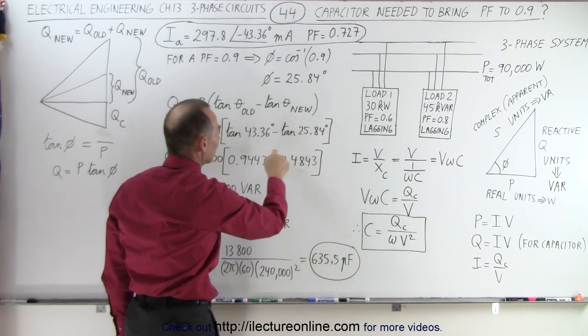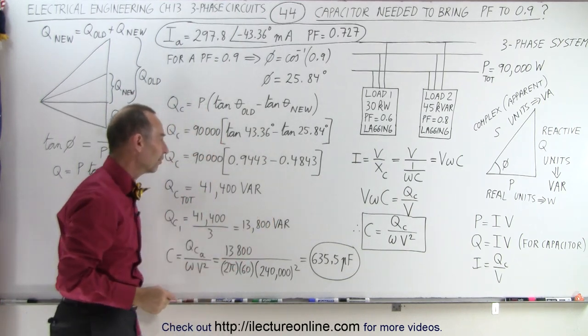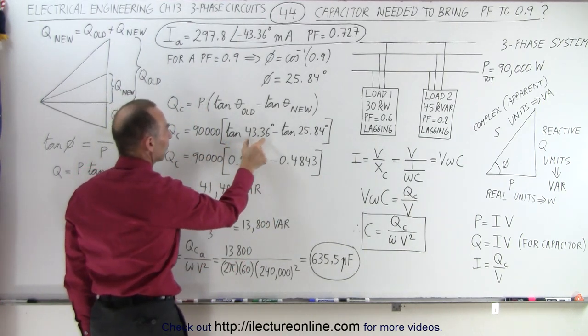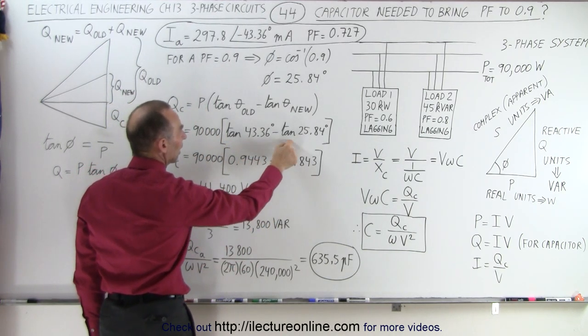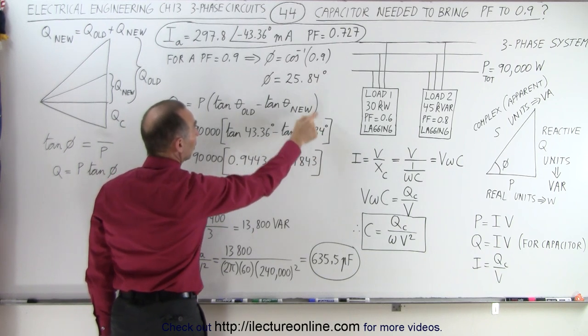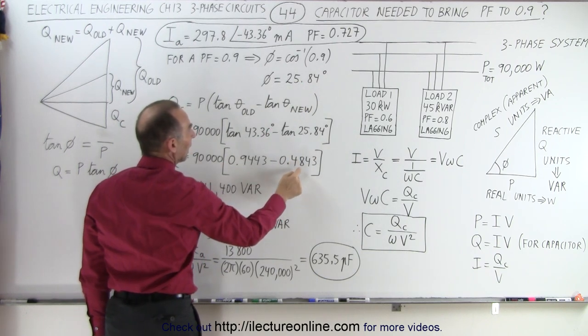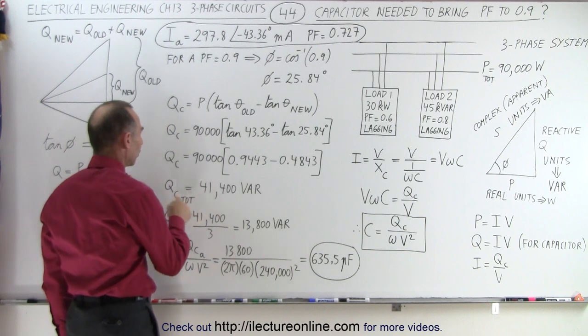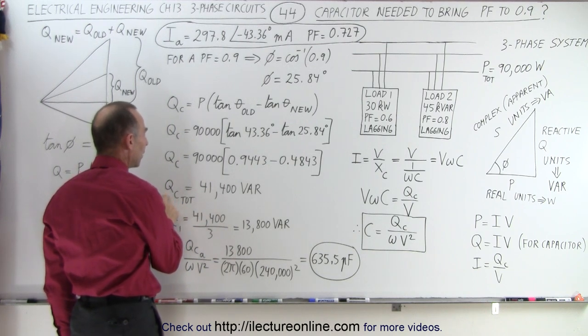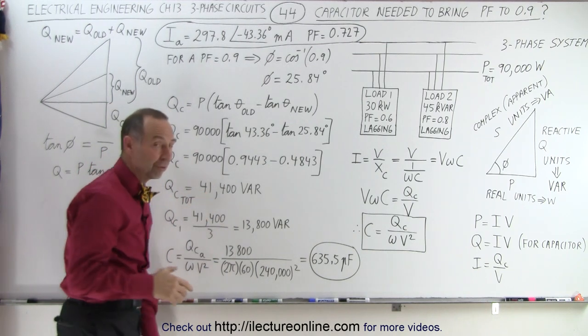We want this to be a positive value, so we use positive angles to see the difference. Notice we go from the tangent of this, which is almost 1, minus the tangent of the new phase angle we want for a power factor of 0.9, and so that equals this. In other words, the total reactive power of the circuit is 41,400 VAR.